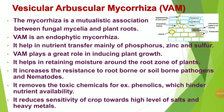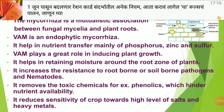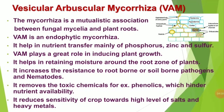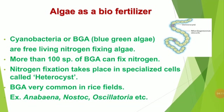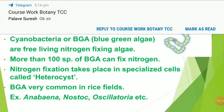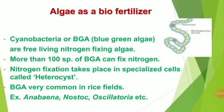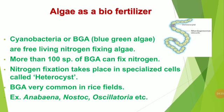VAM also reduces the sensitivity of crops towards high levels of salts and heavy metals. Algae as a biofertilizer: Cyanobacteria or BGA are free-living nitrogen-fixing algae. More than 100 species of BGA can fix nitrogen. Nitrogen fixation takes place in specialized cells called heterocysts. BGA are very common in rice fields; examples include Anabaena, Nostoc, Oscillatoria, etc.